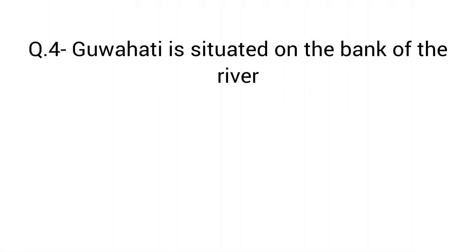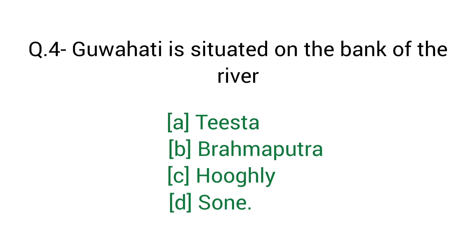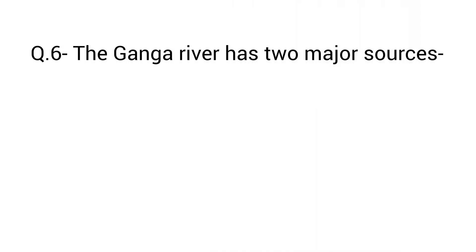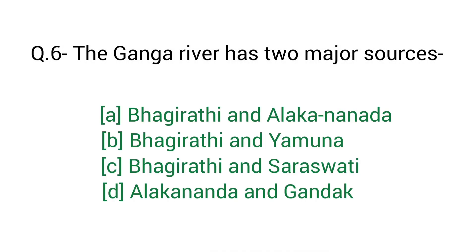Question number 4: Guwahati is situated on the bank of the river — right answer option B: Brahmaputra river. Question number 5: The originating point of river Godavari is — right answer option A: Nasik. Question number 6: The Ganga river has two major sources — right answer option A: Bhagirathi and Alaknanda.